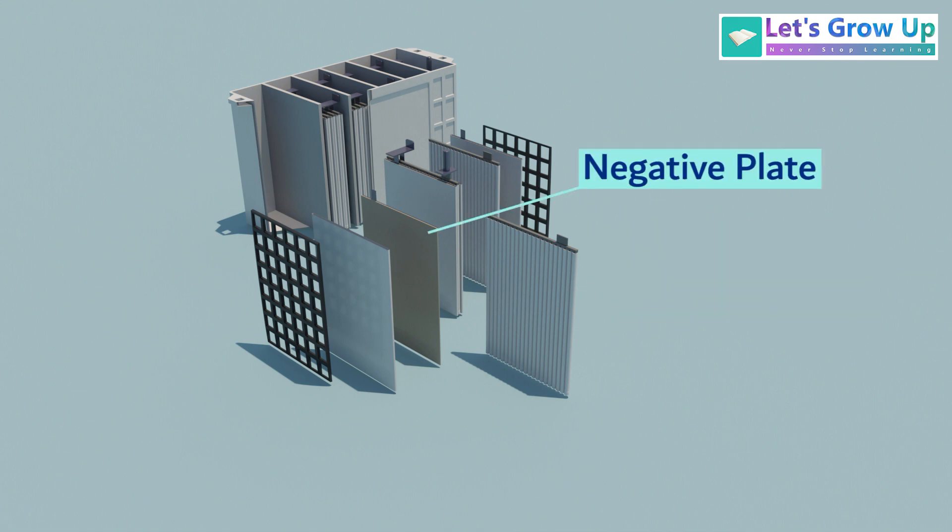This is negative plate anode. This also consists of a lead alloy grid, and the grid is coated with spongy, porous lead, Pb, the other active material.